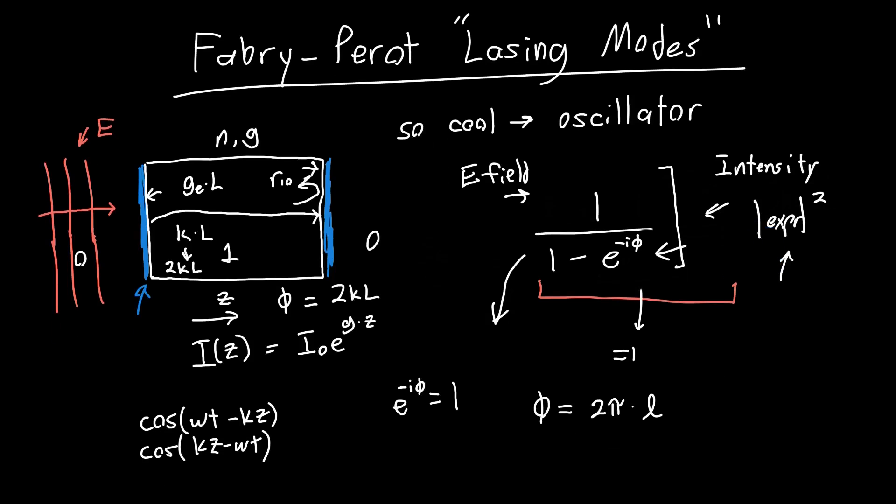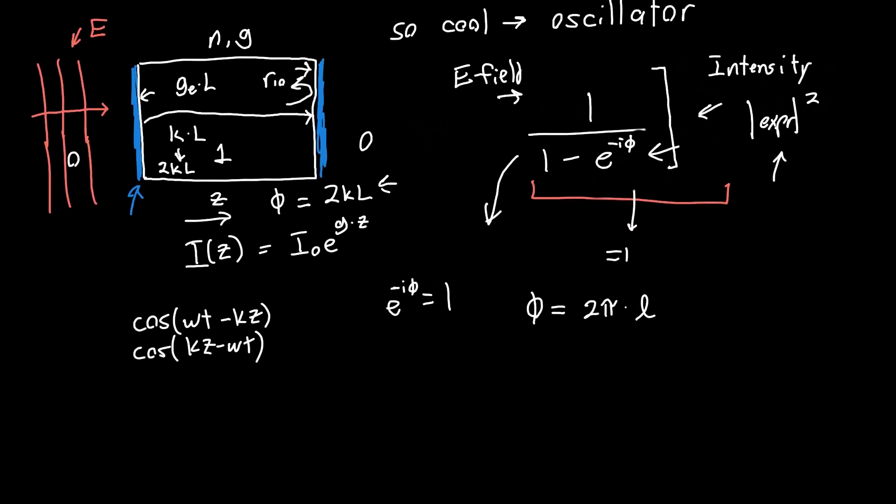So if we substitute phi for what it was originally, just 2kl, 2kl must be equal to 2 pi times some integer. And we know that k is just related to the wavelength, just by the refractive index, times 2 pi over the wavelength. So 2 times 2 pi times n over lambda times l has to equal 2 pi times l.